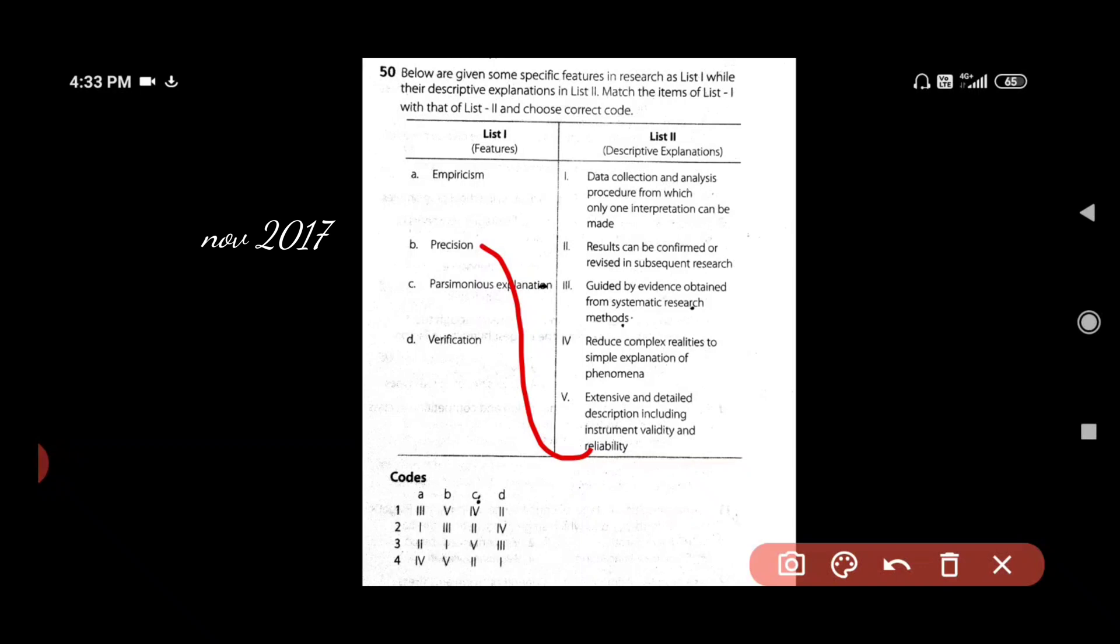As I've already mentioned before, the variables, the terms, the concepts that you're using in your study should be well defined. They should be well outlined. So since B is 5, let us cancel out the wrong options, 2 and 3. So we're left with 1 and 4.